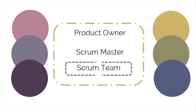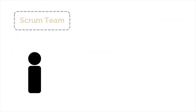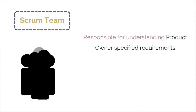Finally, it's the turn of the Scrum team — they actually do the work. The Scrum team is the group of people responsible for understanding the requirements specified by the product owner and creating the deliverables of the project. Considering the earlier example, the software development team, either with newly recruited experts or with newly acquired training, will proceed in accordance with the requirements set by the product owner.